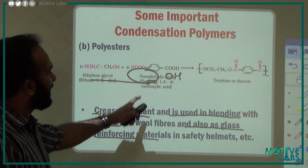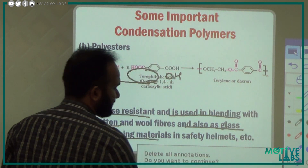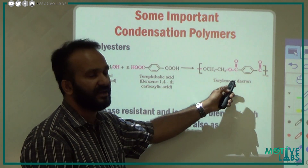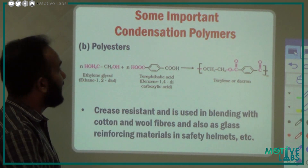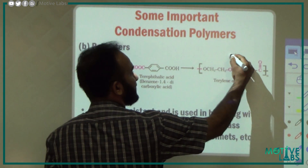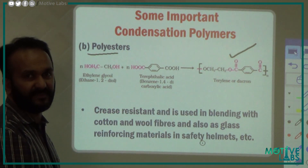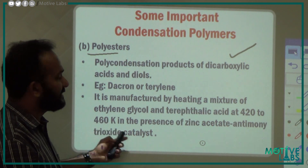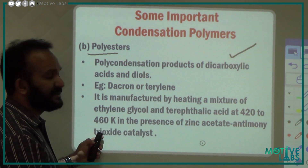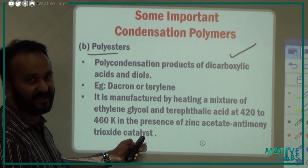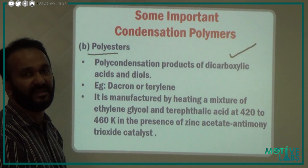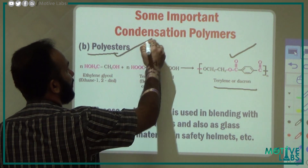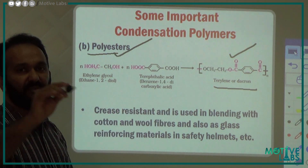In the presence of zinc acetate and antimony trioxide as catalysts. This is a condensation reaction. The product is called Terylene or Dacron. It belongs to the polyester category — it has an ester group. Conditions: 420 to 460 Kelvin temperature, zinc acetate and antimony trioxide catalyst. The polymer formed is called Terylene or Dacron, which is a polyester.